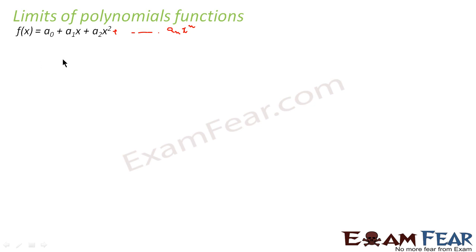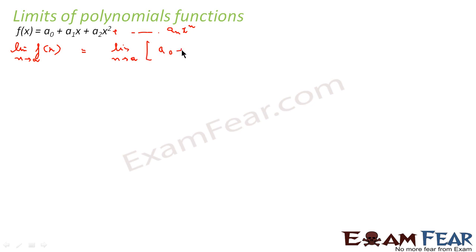Now for this function I have to find the limit. That is, the limit of f(x) as x tends to a. So this will be nothing but the limit as x tends to a of a0 plus a1·x plus a2·x² dot dot dot an·xⁿ. We'll replace x with a, or we'll take individual limits.